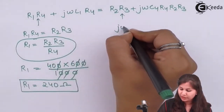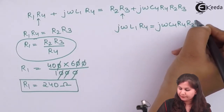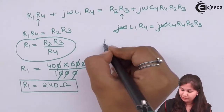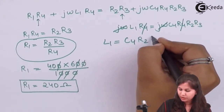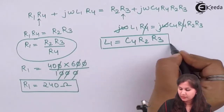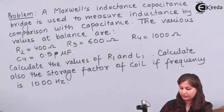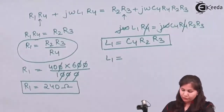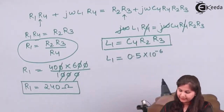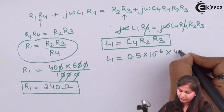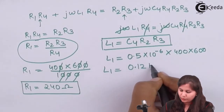Equating the imaginary parts: jωL1·R4 = jωC4·R4·R2·R3. Cancelling jω and R4 from both sides, we get L1 = C4·R2·R3. Putting in the values — C4 = 0.5 μF = 0.5 × 10⁻⁶ F, R2 = 400 Ω, R3 = 600 Ω — we get L1 = 0.12 H.